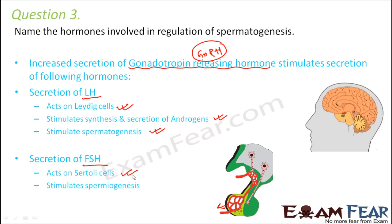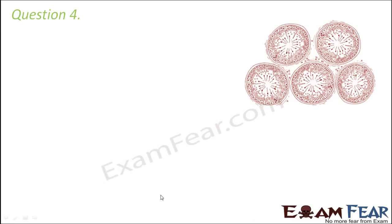FSH acts on the Sertoli cells — the cells which provide nutrition to male germ cells and form the inner lining of the seminiferous tubules. FSH stimulates spermiogenesis, the process by which spermatids are transformed into sperms. So LH and FSH play a very important role in regulating spermatogenesis, and both are in turn controlled by GnRH from the hypothalamus.